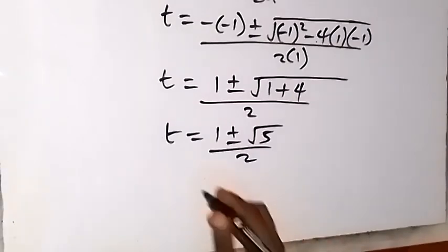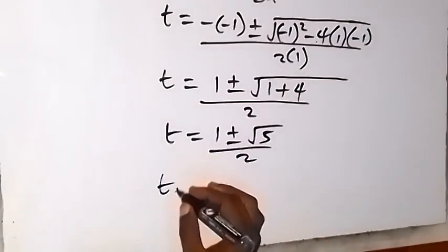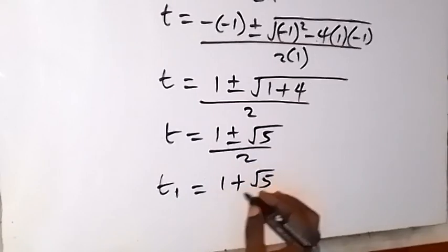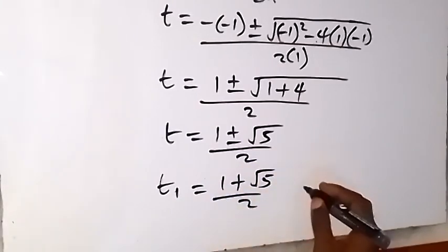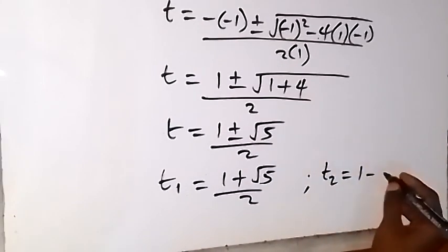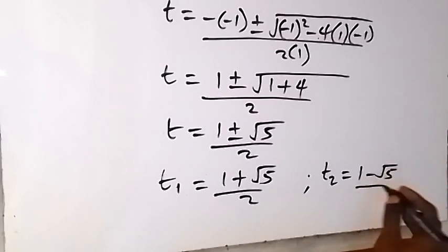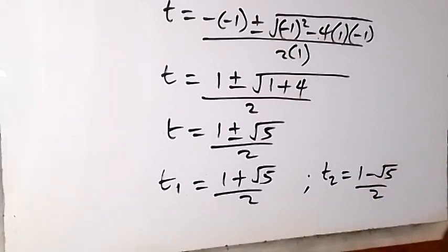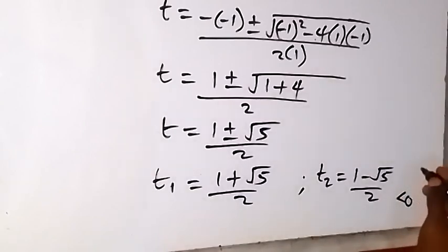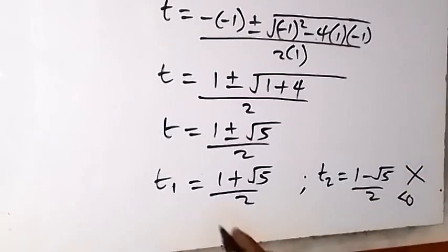We have two possible values of t. The first is t₁ = (1 + √5)/2, and the second is t₂ = (1 - √5)/2. This second value is less than zero, and since t = √x must be non-negative, we are not interested in that result — there is no solution from t₂. We work with t = (1 + √5)/2.